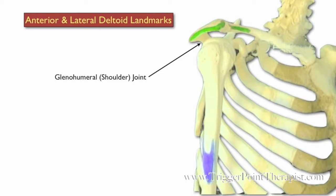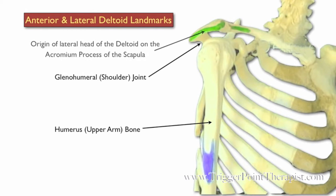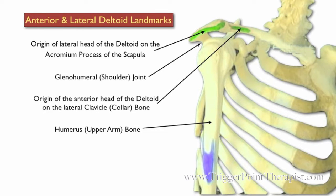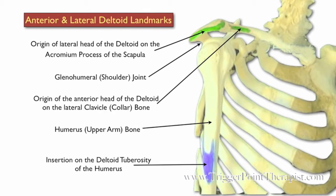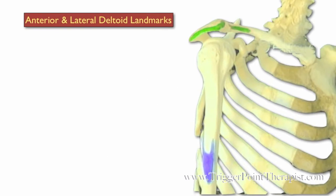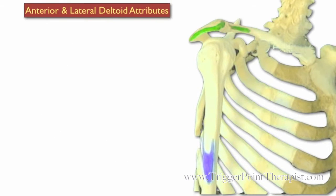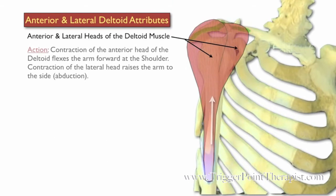Let's look at the landmarks for the anterior and lateral deltoids. First we have the glenohumeral joint and the humerus. The origin of the lateral head of the deltoid is on the acromion process of the scapula, and the origin of the anterior head of the deltoid is on the lateral clavicle. They both insert on the deltoid tuberosity of the humerus.